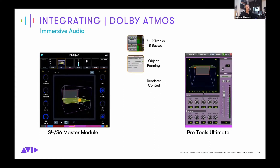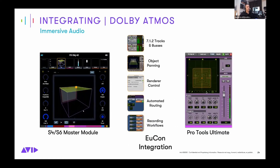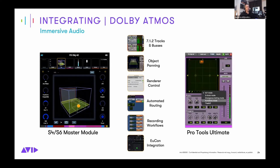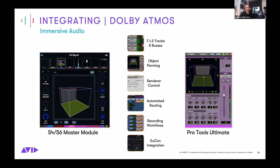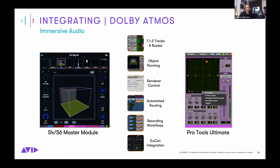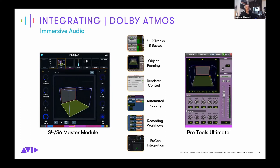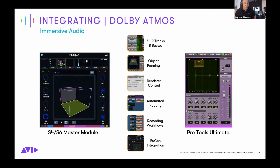One thing we've mentioned again and again is that Pro Tools is extremely well integrated with the Dolby panning and rendering system. We introduced 7.1.2 tracks and buses throughout Pro Tools, which is the main bus format that goes into the renderer. We have object panning directly from our native panner, so you can use Pro Tools more or less like you always have — you just have extra dimensions to work with. Pro Tools connects directly to the renderer within the software; it doesn't require any other install, it just needs to see the renderer on the same machine or on the network.